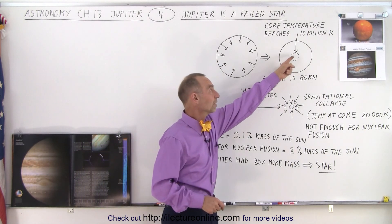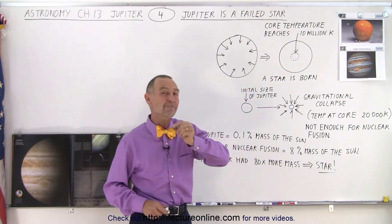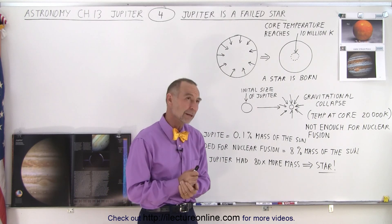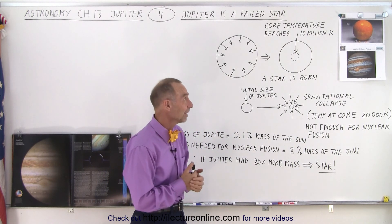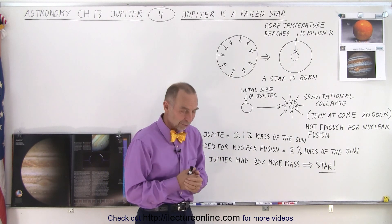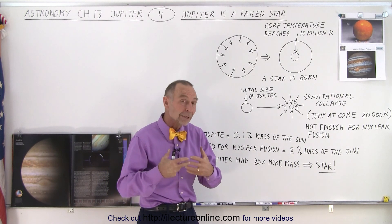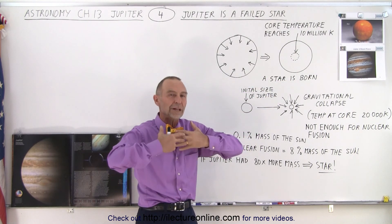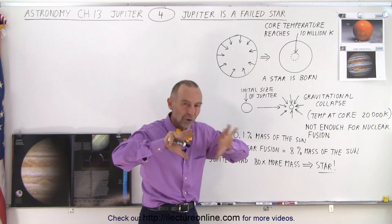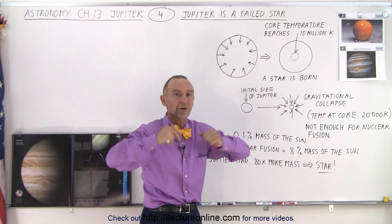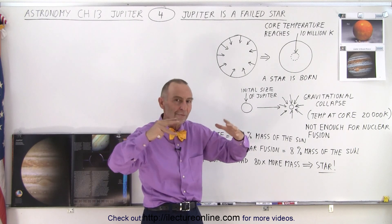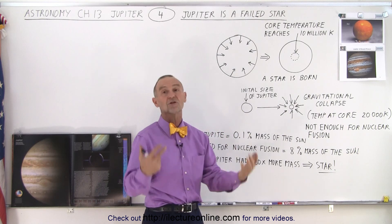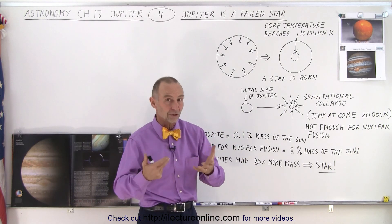Eventually when the temperature at the core reaches 10 million degrees Kelvin — which is a little less than 20 million degrees Fahrenheit — nuclear fusion will start. The nuclear fusion will generate so much energy that the pressure of that energy will halt the compression of the star, and the star will balance out and then shine for billions and billions of years just like our Sun does.